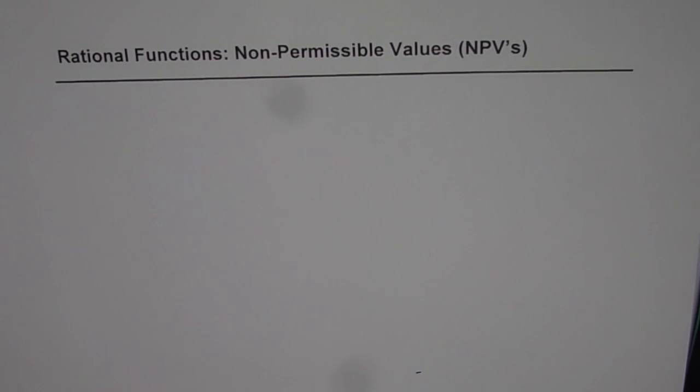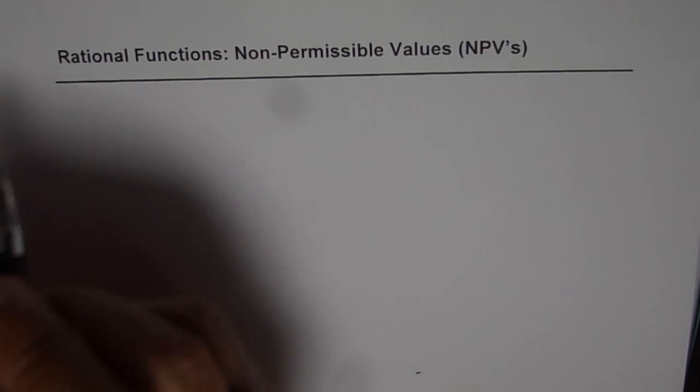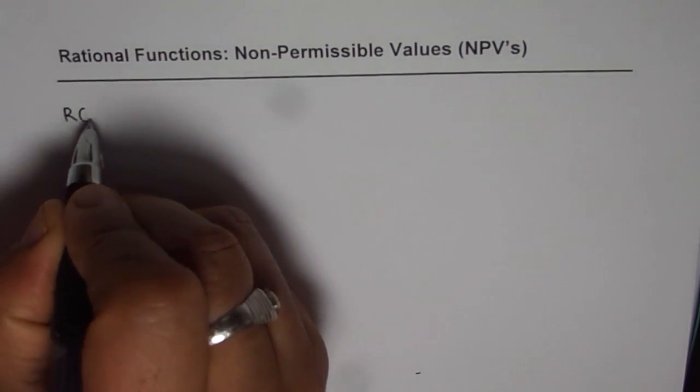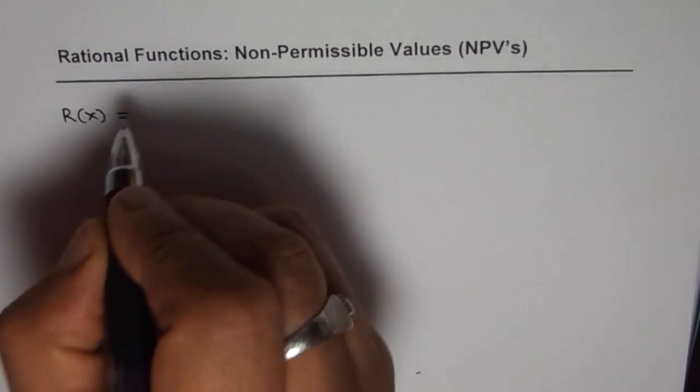I'm Anil Kumar and in this video we will learn what we understand by non-permissible values for rational functions. As you know, rational functions can be written as a quotient of polynomial functions.